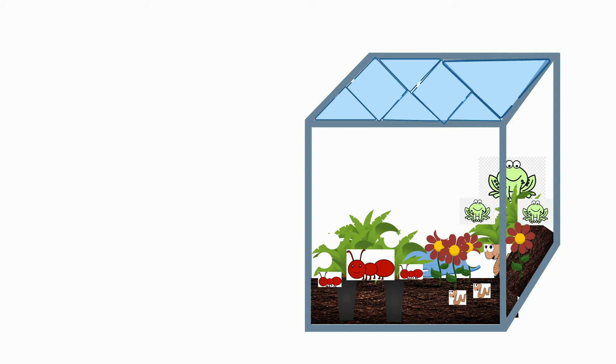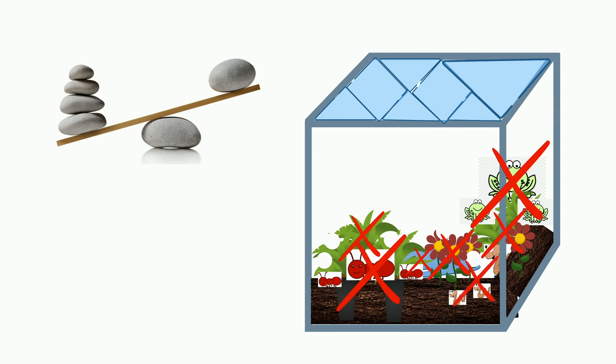But if one of these plants or animals or resources are removed, the life in the terrarium becomes uneven, and the plants and animals would die. The connection is broken. For example, without water, the plants would stop growing, and the animals will not have food, so they will starve.